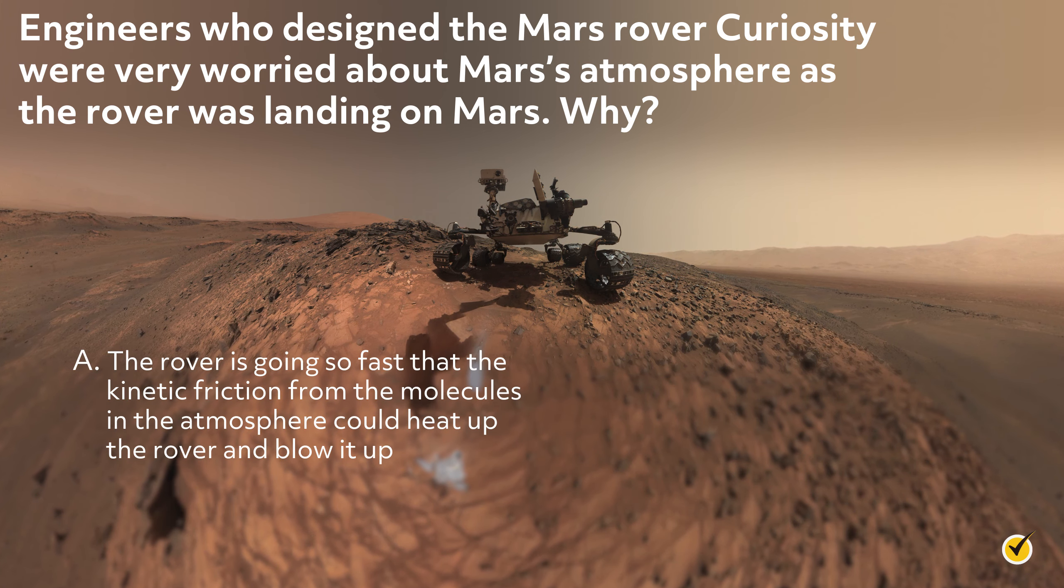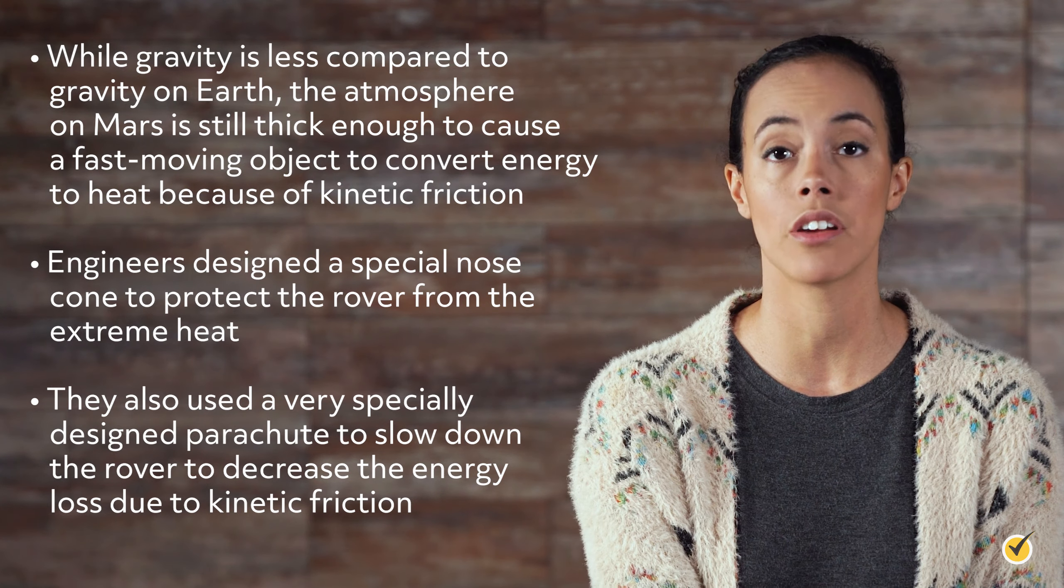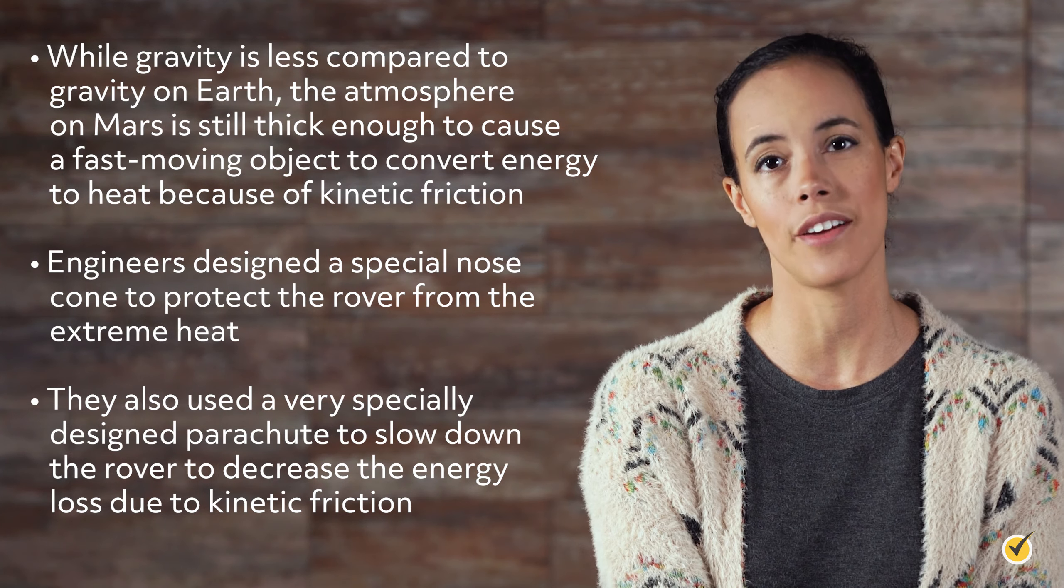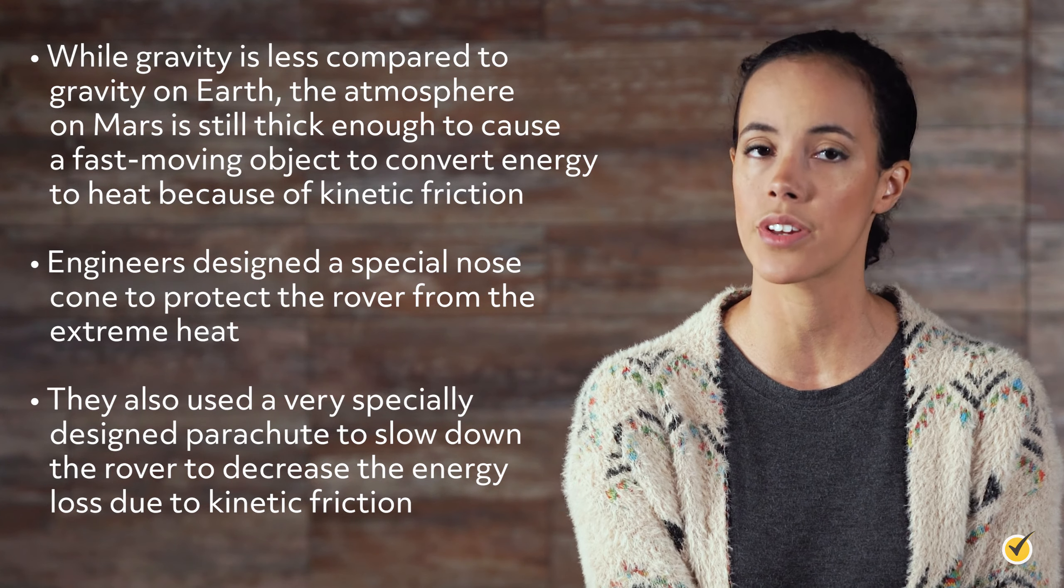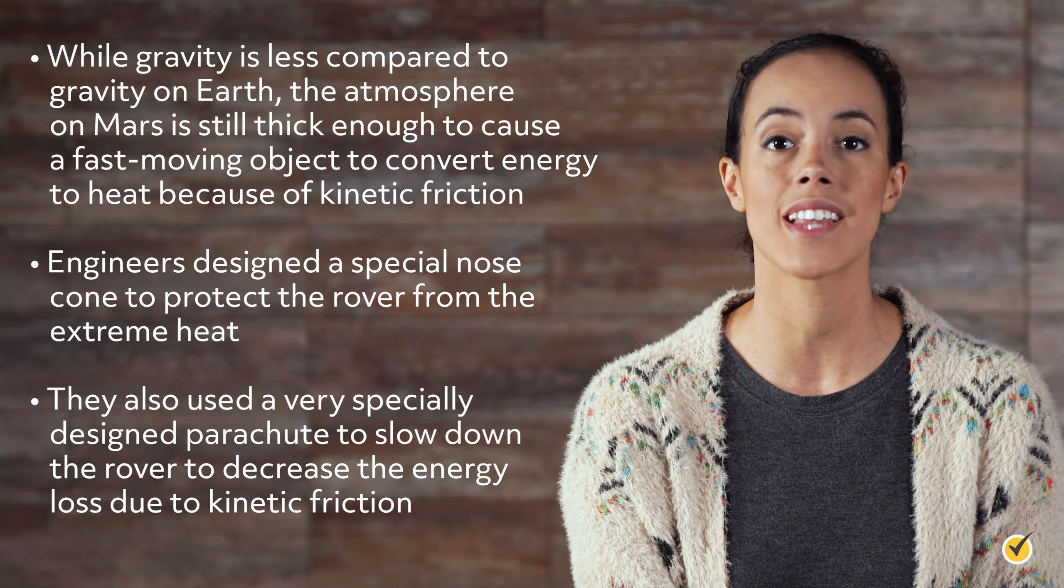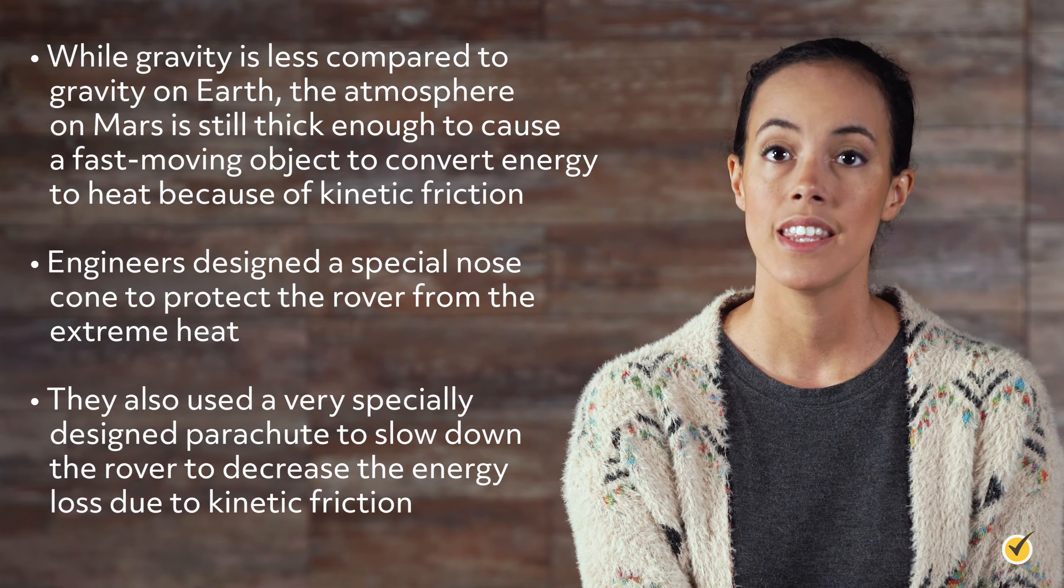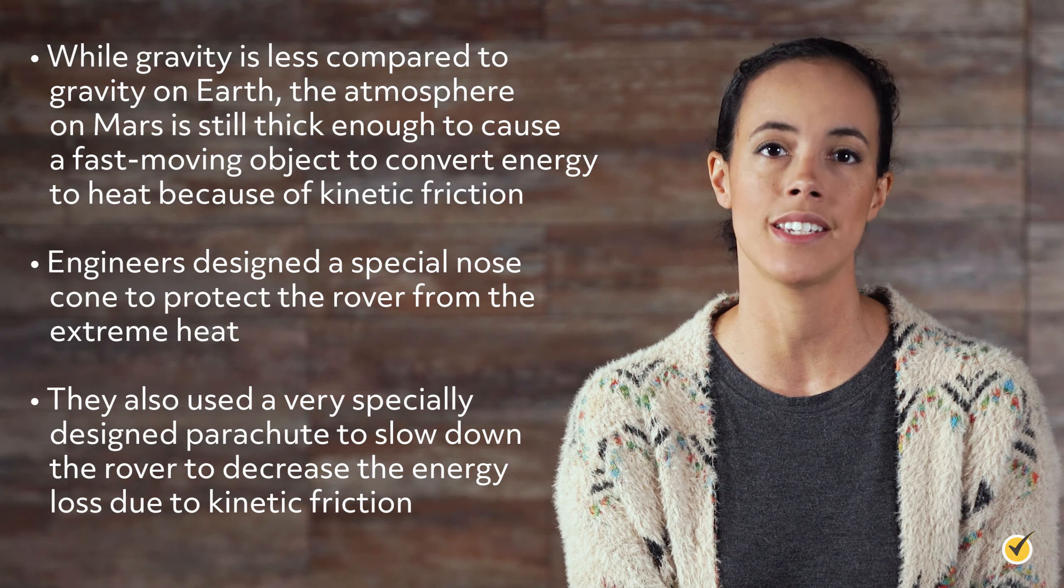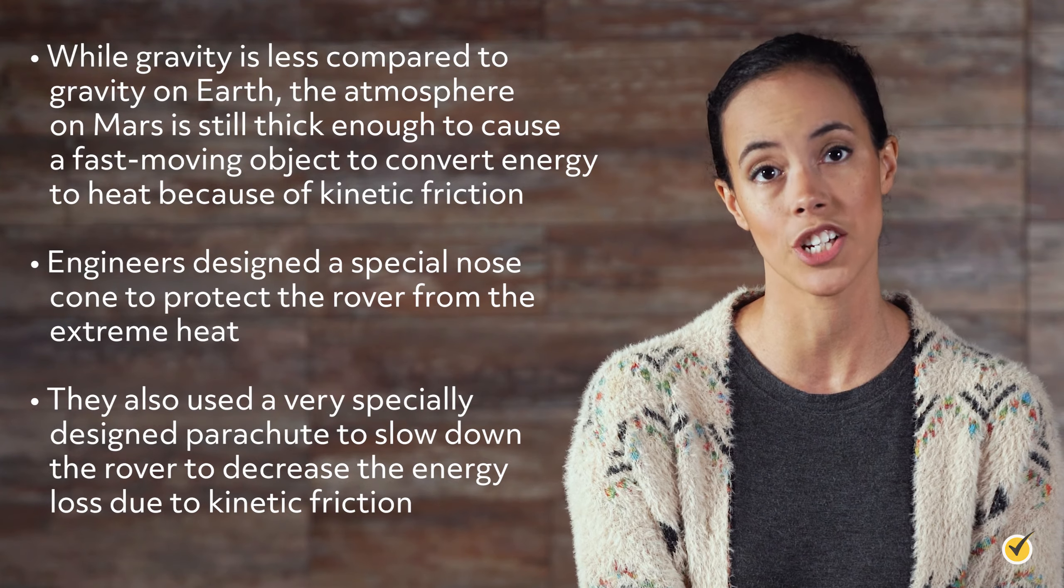The answer is A. While gravity on Mars is less compared to gravity on Earth, the atmosphere on Mars is still thick enough to cause a fast-moving object to convert energy to heat because of kinetic friction. Engineers designed a special nose cone to protect the rover from the extreme heat. They also used a very specially designed parachute to slow down the rover to decrease the energy loss due to kinetic friction.